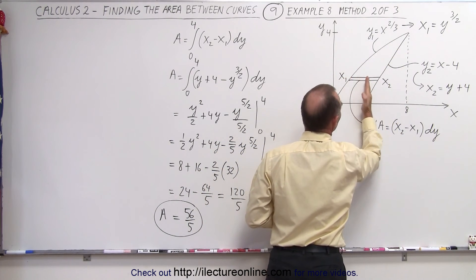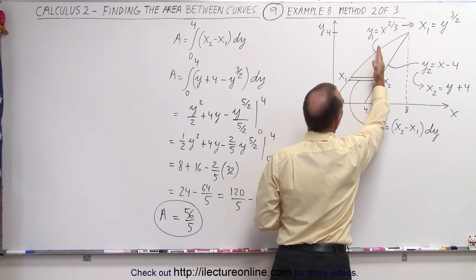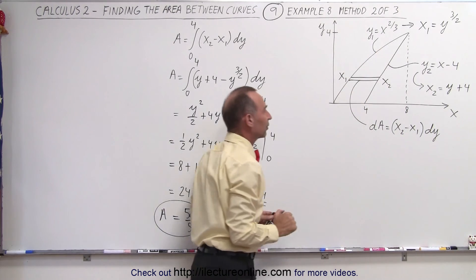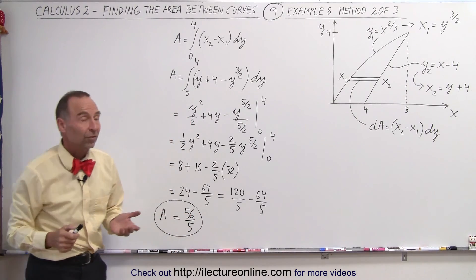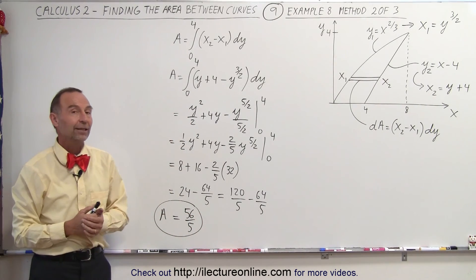If we have the dA like this then we have to stop at x equal 4 and have a different dA for the remainder of the area to calculate that. So that is the second method that you can use to find the area like this.